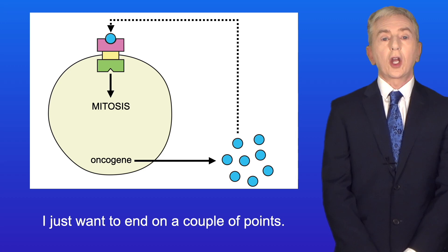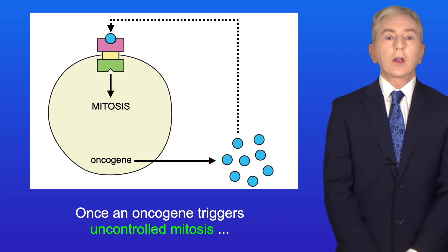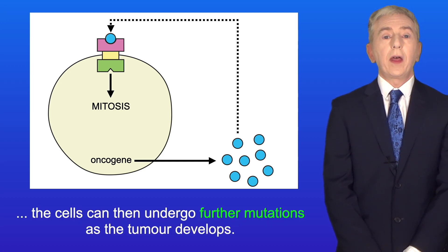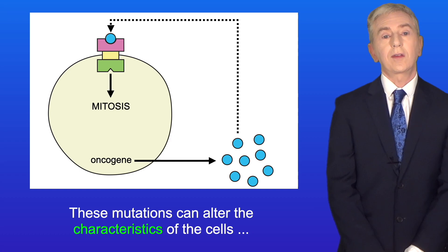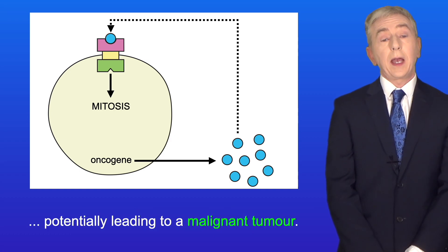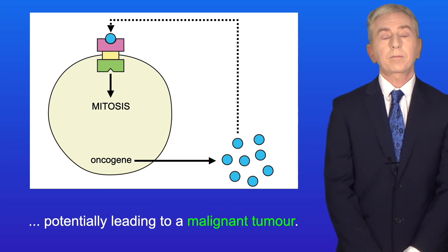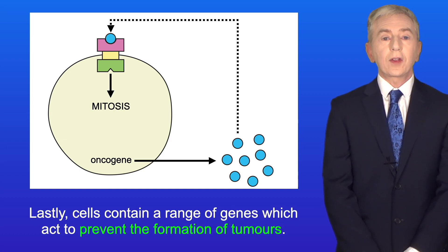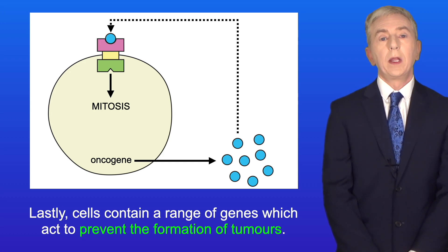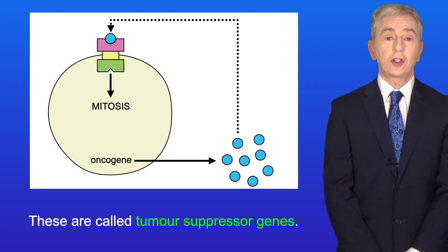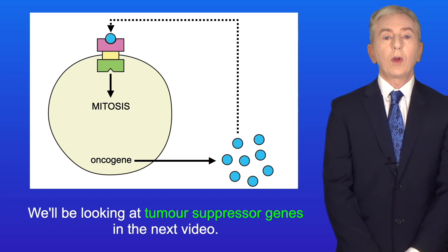Once an oncogene triggers uncontrolled mitosis, the cells can then undergo further mutations as the tumour develops. These mutations can alter the characteristics of the cells, potentially leading to a malignant tumour. Lastly, cells contain a range of genes which act to prevent the formation of tumours — these are called tumour suppressor genes, and we'll be looking at tumour suppressor genes in the next video.